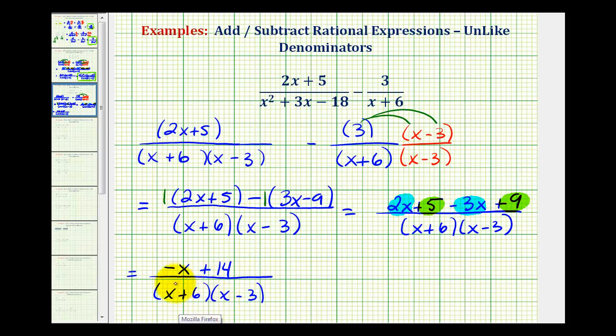This will not simplify because negative x plus 14 does not factor, and therefore there are no common factors other than 1 between the numerator and denominator. But sometimes you will see this expressed in a slightly different way. If we wanted to, we could factor out a negative or negative 1 from the numerator.